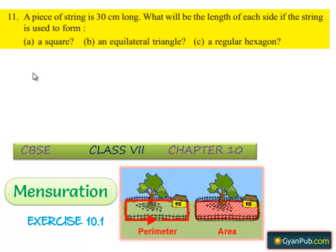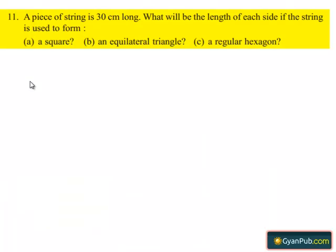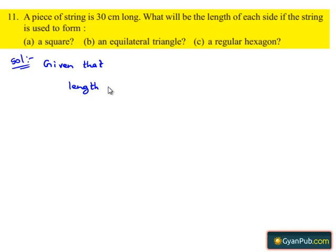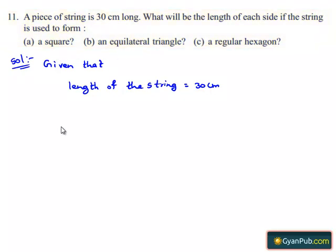Moving on to the 11th question: given a piece of string is 30 cm long, what will be the length of each side if the string is used to form a square, an equilateral triangle, and a regular hexagon? Let's do the solution. Given that the length of the string is 30 cm, we should find the length of each side in the following cases. First,